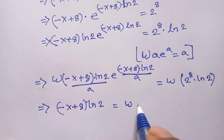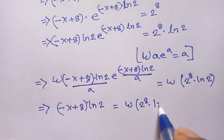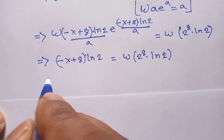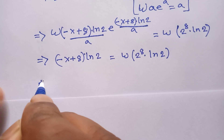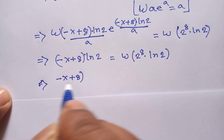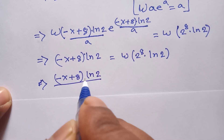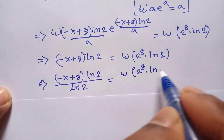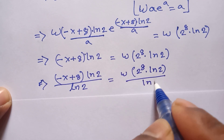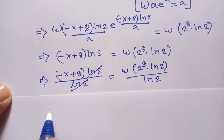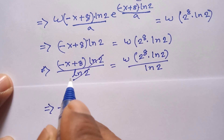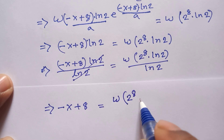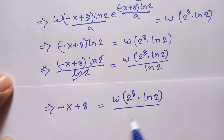Therefore (−x + 8) times ln(2) equals W(2^8 times ln(2)). Dividing both sides by ln(2): (−x + 8) equals W(2^8 times ln(2)) divided by ln(2). The ln(2) cancels, leaving −x + 8 equals W(2^8 · ln(2)) divided by ln(2).